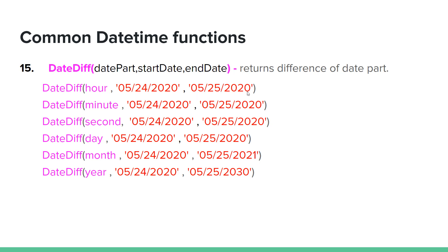For example: 05/25/2020 and 05/24/2020 — the output is 1. DATEDIFF returns the difference as an integer value. The parameter includes the date part unit such as year, month, or day.